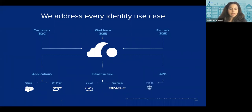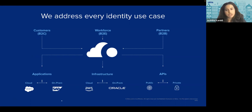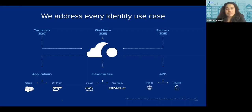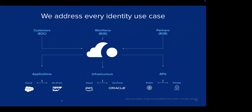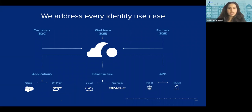Besides this, there is API access management. Web applications are straightforward — you access them via mobile app or browser. But for APIs, anything in the backend needs to be secured as well. We cover public and private APIs. We do not replace gateways — we work in conjunction with them. We also have an API management access solution to help with that. This is pretty much what Okta covers in terms of identity and resources.